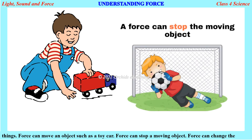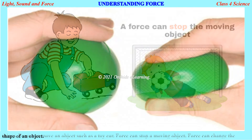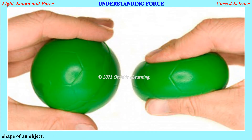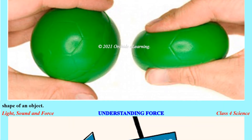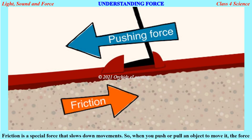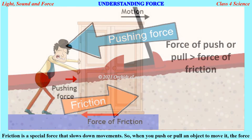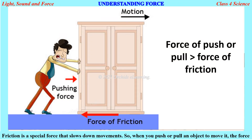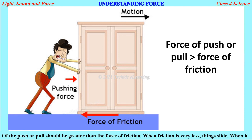Force can stop a moving object. Force can change the shape of an object. Friction is a special force that slows down movement. When you push or pull an object to move it, the force of the push or pull should be greater than the force of friction.